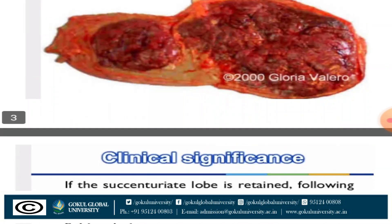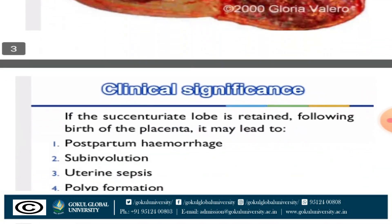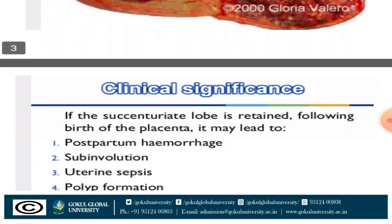The incidence is 3%. In this image, you can see one lobe is separated from the whole placenta, and there are blood vessels communicating between the placenta and the separated lobe. If there are no blood vessels present, it is called placenta spuria. But if communicating blood vessels are present, it is called placenta succenturiata.